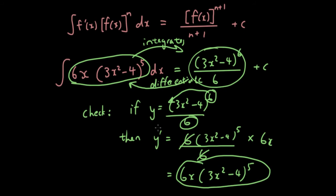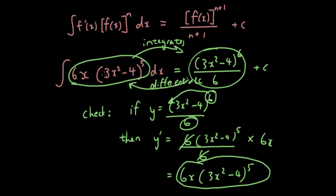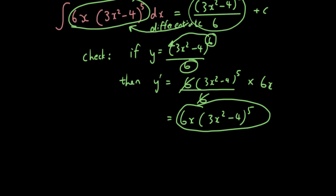Now, I know what your next question is going to be — this seems like a coincidence that it matches the formula, since we had 6x at the front. What if I gave you another question that doesn't have 6x at the front? For example, what if I gave you the integral of 5x(3x² - 4)^5 dx? Let's try that.